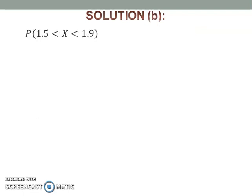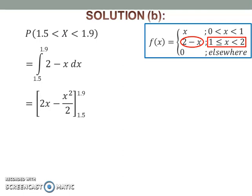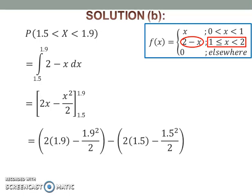To find the probability of x between 1.5 and 1.9, first look at the function. From the function, it can be seen that 1.5 and 1.9 lie in this interval. Thus, integrate (2 minus x) with respect to x from 1.5 to 1.9. Then substitute 1.5 and 1.9 into x and calculate the probability.